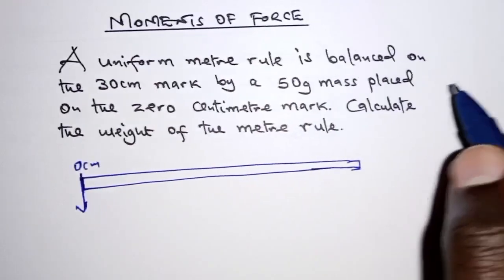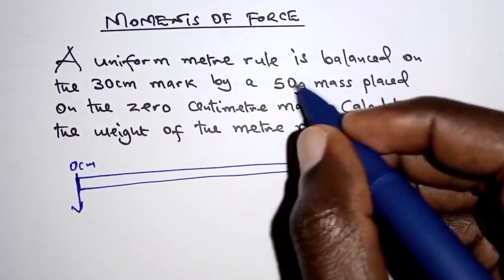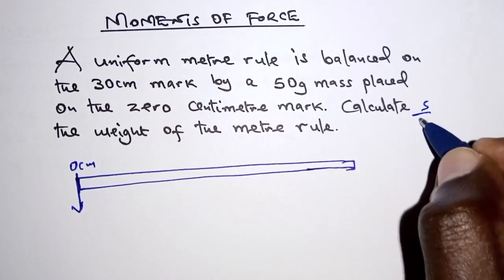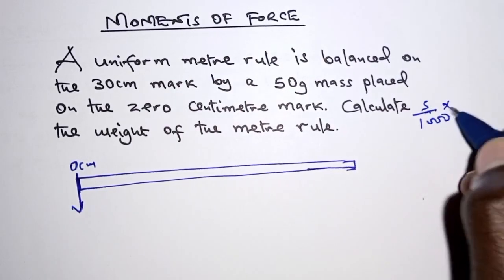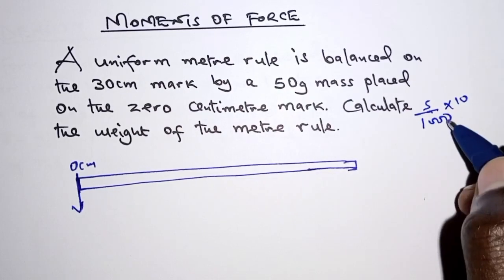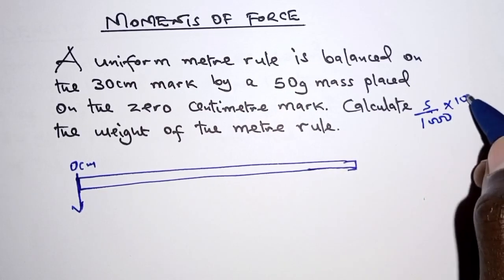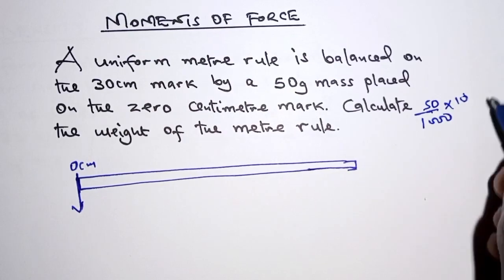Now 50 grams in kilograms, we divide by 1000 and then we multiply that by 10 to convert it into force. So that should give us, sorry this is 50 not 5.